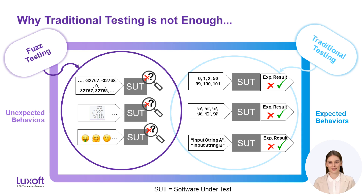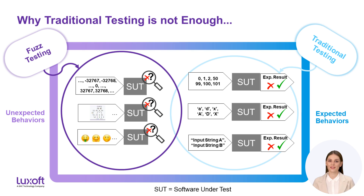We simply monitor the software under test until it crashes, throws an exception, or enters an infinite loop. As soon as this happens, we can use the generated test data to analyze and fix the bug. The advantage of this method is you can do this at any stage of your software development process, even if your software is already developed and in production.